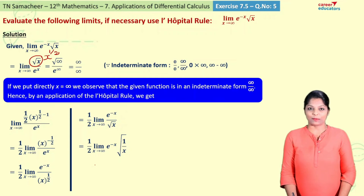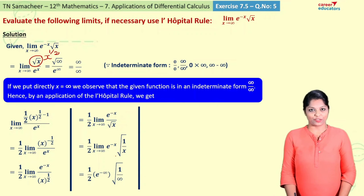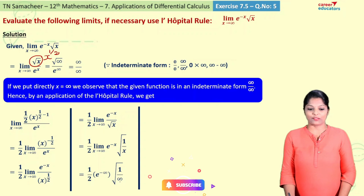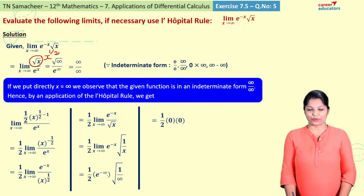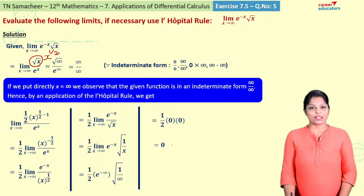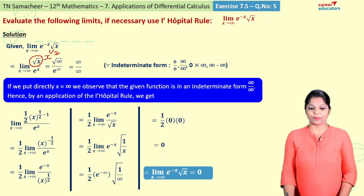Now applying the limit, substituting infinity: we get 1 by 2 into e power minus infinity into square root of 1 divided by infinity. The value of e power minus infinity is 0, and square root of 1 divided by infinity is also 0. Zero into any number gives 0, and 0 is not in indeterminate form. Therefore, limit x tends to infinity of e power minus x into square root of x equals 0.